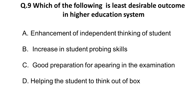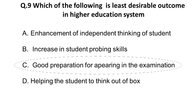Question 9: Which of the following is the least desirable outcome in higher education? Options: A) enhancement of independent thinking, B) increase in students' probing skills, C) good preparation for appearing in examination, D) helping students think out of the box. The correct answer is C — preparing students to appear in examinations is the least desirable outcome. Higher education is about independent thinking, probing skills, and thinking out of the box.